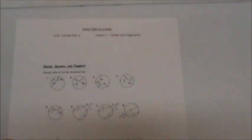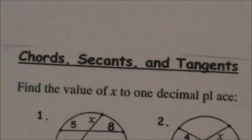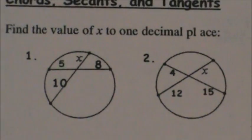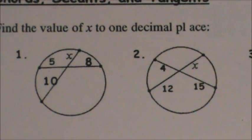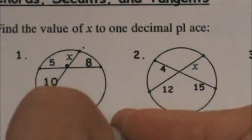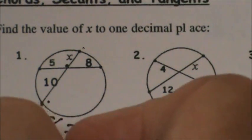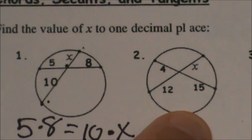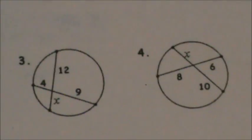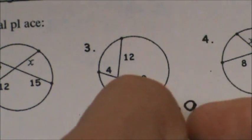Let's go through some practice problems covering all different types. The first is a chord-chord problem. We take 5 times 8, set equal to 10 times x. That gives 40 equals 10x, so x equals 4. For number 3: x times 12 equals 4 times 9, so 12x equals 36, meaning x equals 3.